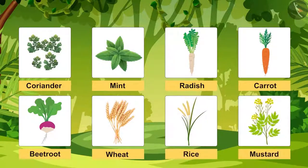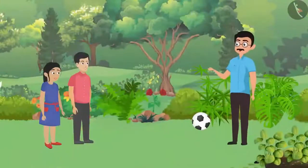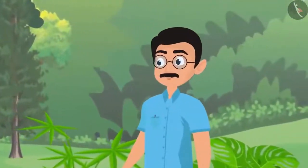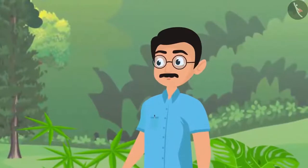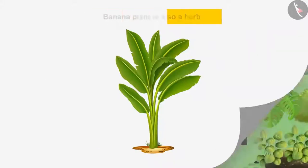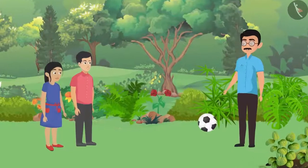Plants that have thin and soft stems are called herbs. Coriander, mint, radish, carrot, beetroot, rice, and mustard are some examples of herbs. Interestingly, most herb plants are small, but the banana plant, which is also a herb, is quite huge — something Pankaj didn't know before.